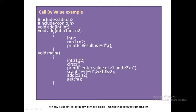Here we are calling the add function by passing values of variables z1 and z2. If the user enters z1 as 10 and z2 as 20, then this line becomes 'add(10, 20)'. The value 10 gets stored in n1 and 20 gets stored in n2. Control enters the function, addition of 10 and 20 is performed, and the result is printed. This is an example of call by value.